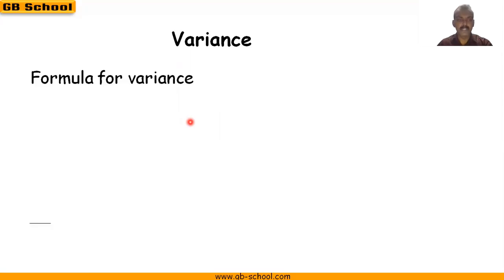We will see the formula for variance. First, for ungrouped data where the sample size is less than 30.